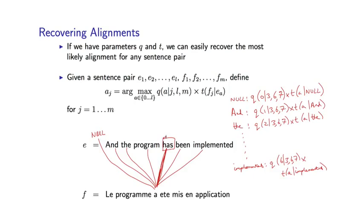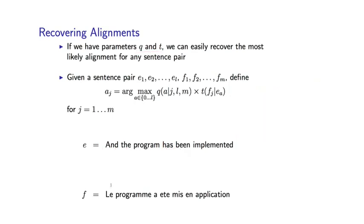To recap: the main message is that once we have these parameters, it's very easy to recover alignments — filling in for each French word an alignment to one of the English words, where English words can include the null position.